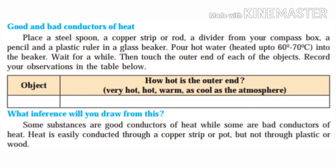Place a steel spoon, a copper strip or rod, a divider from your compass box, a pencil, and a plastic ruler in a glass beaker. Pour hot water into the beaker. Wait for a while. Then touch the outer end of each of the objects. Record your observations in the table below.